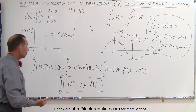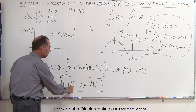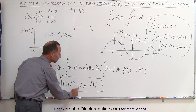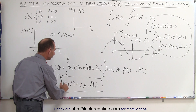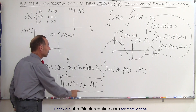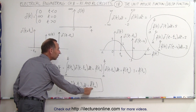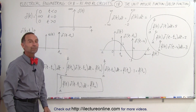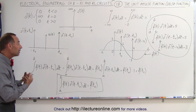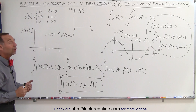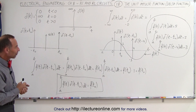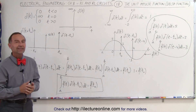This means that when we integrate any function multiplied times the delta function shifted by t sub naught, the integral from a to b — making sure that interval includes the point where they intersect — gives us the function evaluated at that particular point. That's a very important equation to remember, because it will be used quite a bit in the future. So now we know and understand a little bit more about the unit impulse function, also known as the delta function.